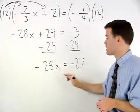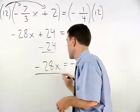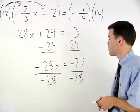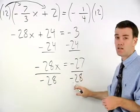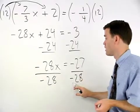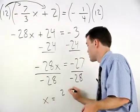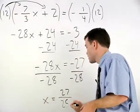To get x by itself, we divide both sides by negative 28. And remember that a negative divided by a negative is a positive, so our answer is x equals positive 27 over 28.